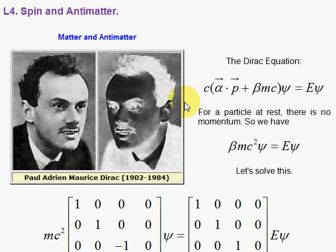Spin and antimatter can be thought of as the two children that are born from the marriage of quantum mechanics and relativity. So relativity and quantum mechanics come together in a unified form in this marvelous Dirac equation. That marriage of relativity and quantum mechanics gives us two children: spin and antimatter, which you're about to see just now.